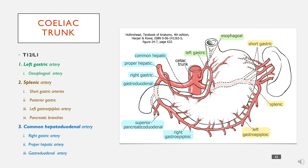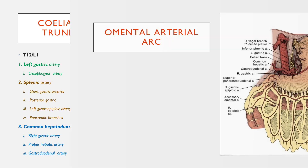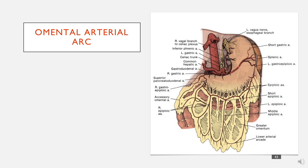To summarize the key points: there are three branches. The left gastric artery supplies the stomach and a bit of the esophagus. The splenic artery primarily supplies the spleen but also gives some supply to the stomach. The common hepatic artery supplies the liver and the duodenum, as well as some aspects of the stomach.